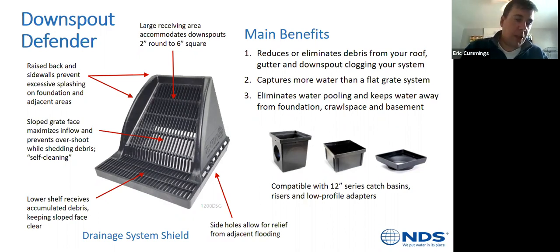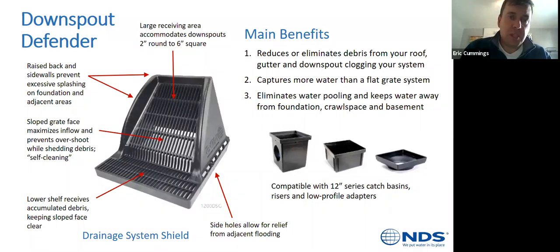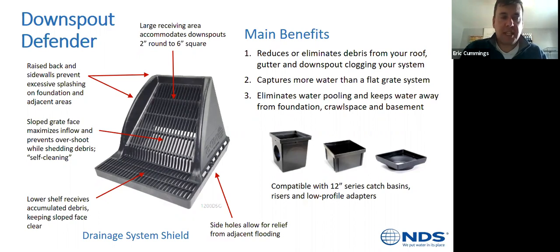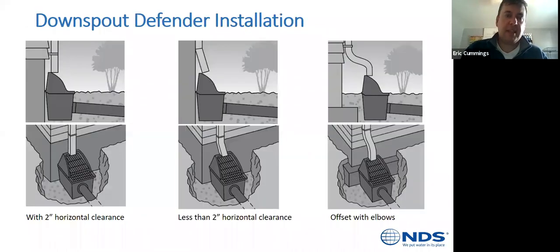The downspout defender stands about eight inches tall, so it's not for every application. If you've got a one-gallon perennial in front of it or a white foundation, it might not be the right solution. It works best in commercial or light commercial applications where you've got four to six-inch downspouts flowing into a 12-inch basin and you never want a callback because the system clogged and water got into the building.